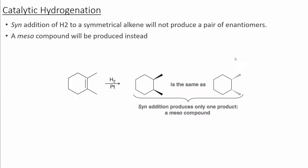If the starting material is symmetrical, then we will not produce a pair of enantiomers. Since there is a line of symmetry within the molecule, a meso compound will be produced by the reaction. If we flip one of these two molecules over, it's the same exact compound as the other product.